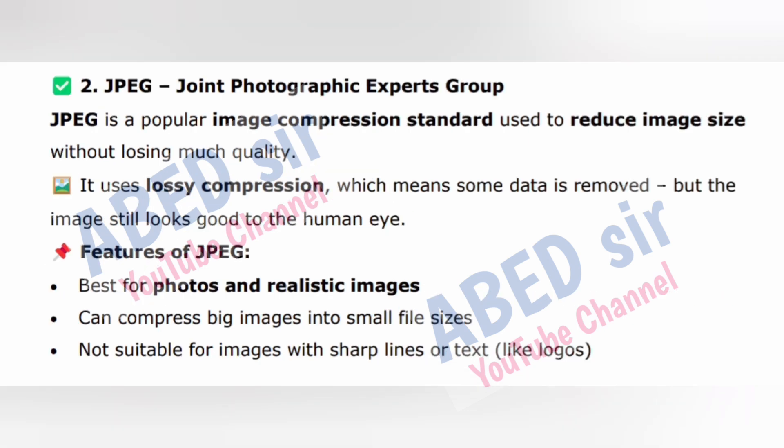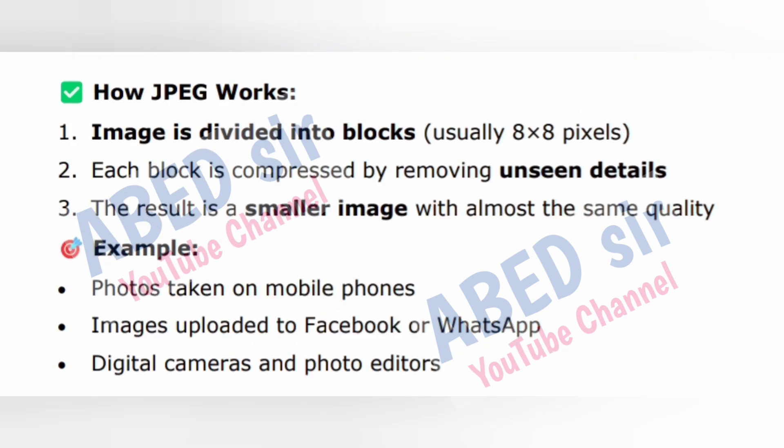JPEG — Joint Photographic Experts Group: a popular image compression standard used to reduce image size without losing much quality. It uses lossy compression, which means some data is removed but the image still looks good to the human eye. Features of JPEG: best for photos and realistic images; can compress big images into small file sizes; not suitable for images with sharp lines or text like logos. How JPEG works: the image is divided into blocks of 8×8 pixels; each block is compressed by removing unseen details; the result is a smaller image with almost the same quality.